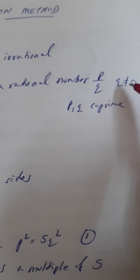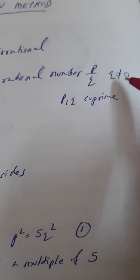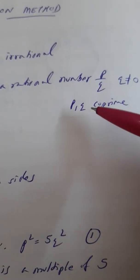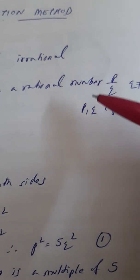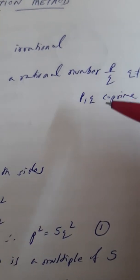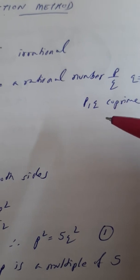And rational numbers, you already know, is in the form of p by q, where the denominator should not be zero, and here p and q are co-prime numbers. Now those who don't know what is co-prime—co-prime numbers are numbers which do not have any common factor.